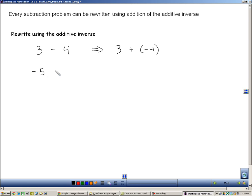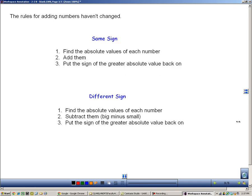Negative 5 minus 9 can be rewritten as negative 5 plus negative 9. Negative 4 minus negative 2 can be rewritten as negative 4 plus positive 2. Notice we're taking all of these subtraction problems and turning them into addition by adding the additive inverse. That's important because we already have rules for addition but don't have any rules for subtraction. If we can turn all subtraction problems into addition, we can use these rules.